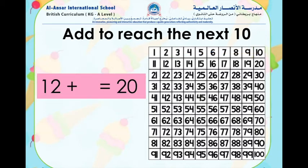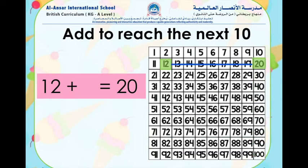Let's try this one: 12 plus what equals 20? First we look for the number 12 on the number chart and count how many blocks we need to reach the number 20. We can count 1, 2, 3, 4, 5, 6, 7, and 8. So we can say that 12 plus 8 equals 20.